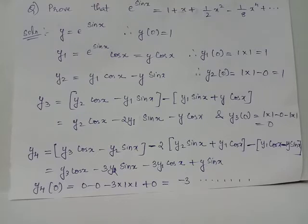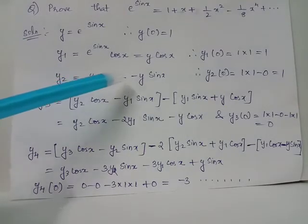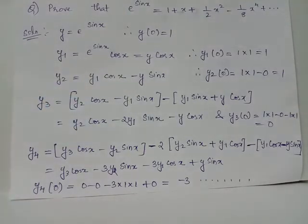y3 is the derivative of y2. Applying the product rule to y1 cos x and to y sin x, we get y3 equals y2 cos x minus y1 sin x minus (y1 sin x plus y cos x). Simplifying, y3 equals y2 cos x minus 2y1 sin x minus y cos x. The value of y3 at x equals 0 is 0.